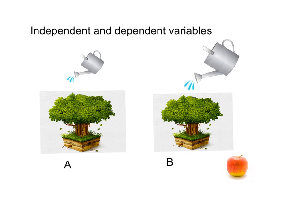So for this, our dependent variables would be the number of apples, the size of the apple, the sweetness of the apples. Those are independent and dependent variables.